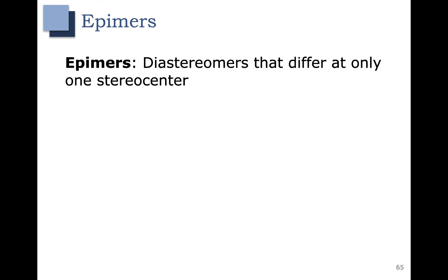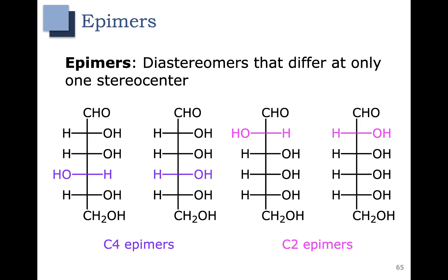One important term to know is the term epimer. Epimers are diastereomers — specifically, diastereomers that differ at only one stereocenter. For example, we have pairs of epimers here: on the left are C4 epimers, meaning numbering from the top of the molecule they differ at carbon 4. On the right we have a pair of C2 epimers, differing at carbon 2 when numbering from the aldehyde. These are diastereomers because we have not flipped all the stereocenters, and specifically they are epimers because only one has been flipped. This concludes chapter 5.